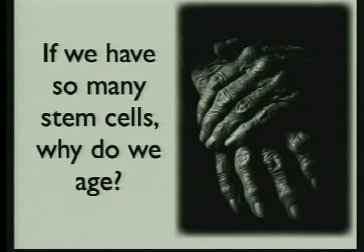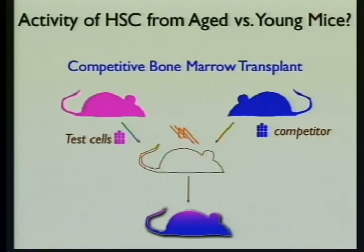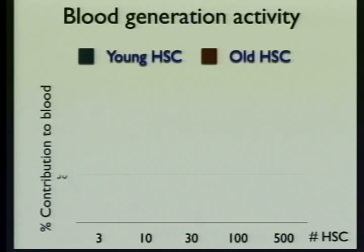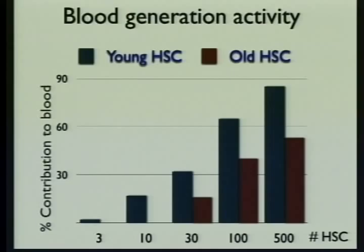That brings me to my next vignette: if we have so many stem cells, why do we age? We have stem cells in our bone marrow but also in our skin and other systems — you would think they would continuously replenish those tissues forever. We wondered what was the character of stem cells in the bone marrow, and we tested this by comparing the activity of stem cells from old mice versus young mice in a bone marrow transplant assay. We compete the two types of stem cells in one mouse by mixing them, irradiate the recipient to ablate their own stem cells, and then look at the blood of the recipient for the proportion made from the two different kinds of stem cells.